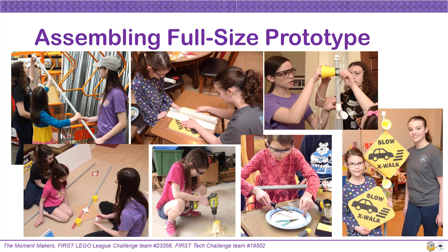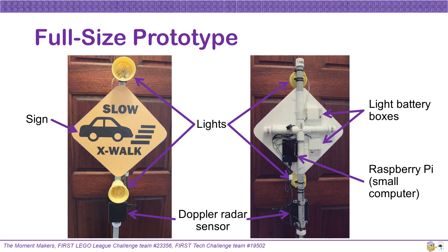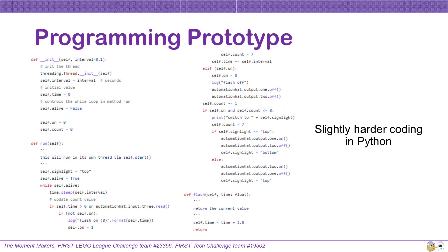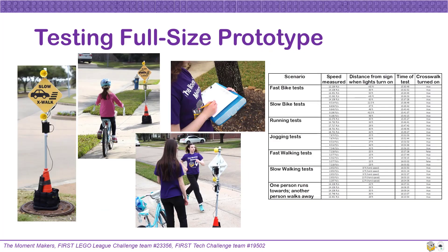Returning our attention back to building our full-size prototype, we needed to select materials, make measurements and cuts, paint, drill, and even learn how to solder wires. Our full-size prototype consisted of a sign that we designed, two lights, a Doppler radar sensor, and a small Raspberry Pi computer to control it. Programming the Raspberry Pi was slightly harder because we used the Python programming language, which most of us were not familiar with. Still, it was very doable for us kids and a great way to learn a new programming language. After we had our full-size prototype fully programmed, we tested running, walking, and biking toward it at different speeds. It was so exciting to see our prototype working.